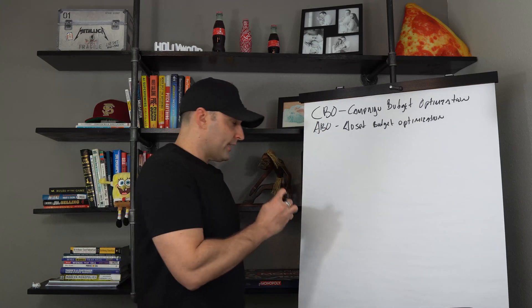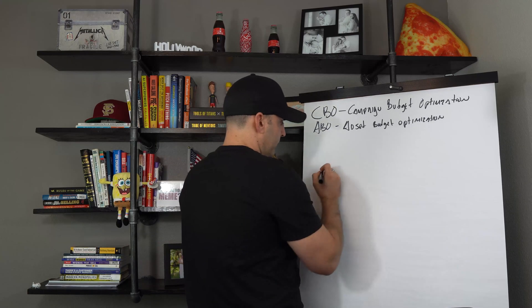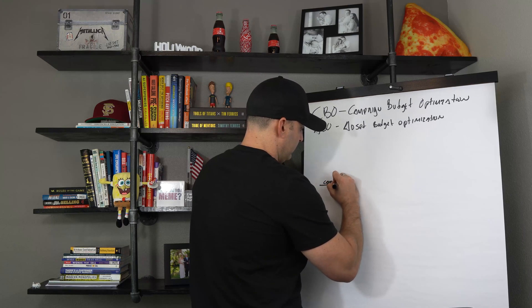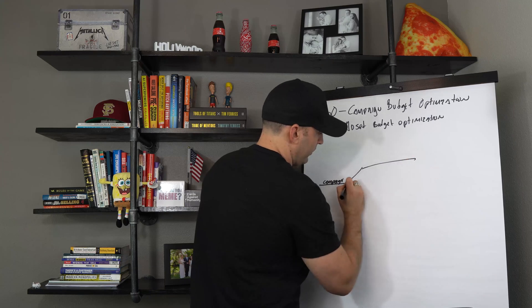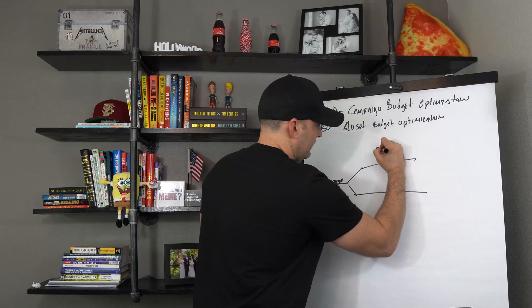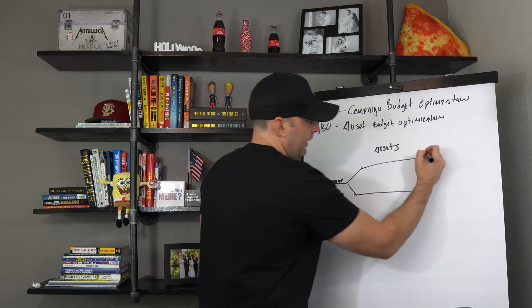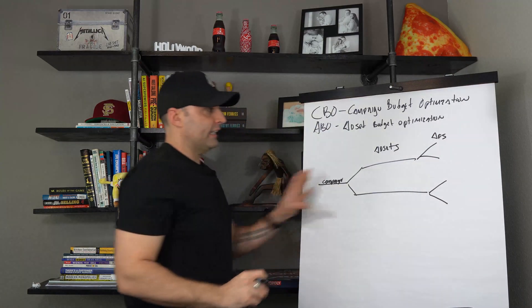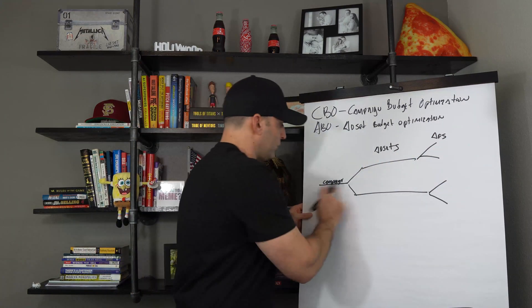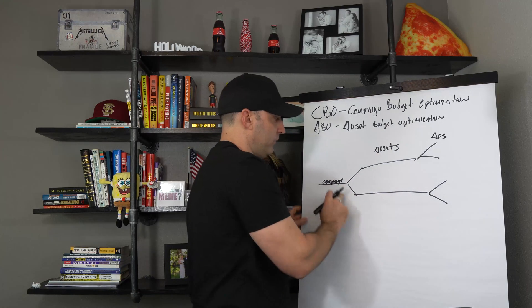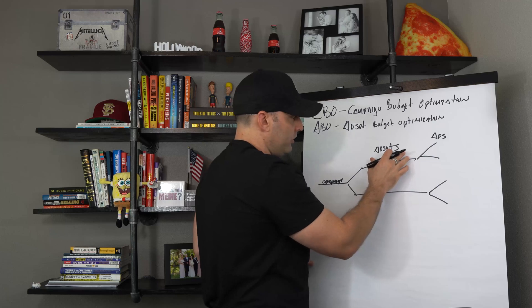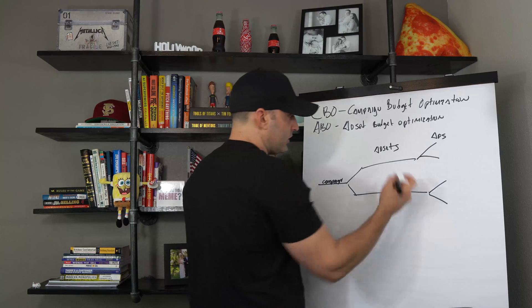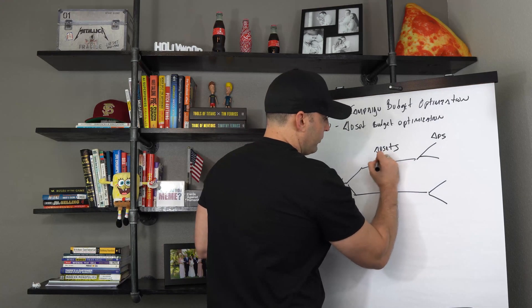So how does that work? When you set your campaign up, the structure is: your campaign at the top, then your ad sets inside it, and then your ads inside those ad sets. That's the structure of your campaign.